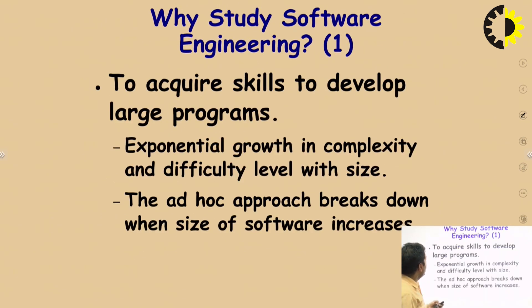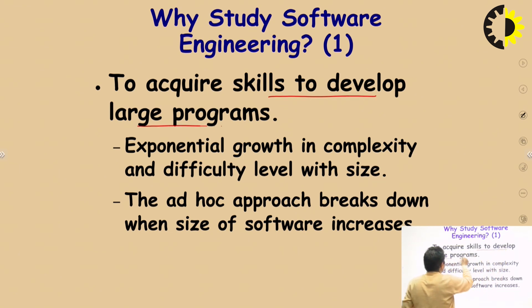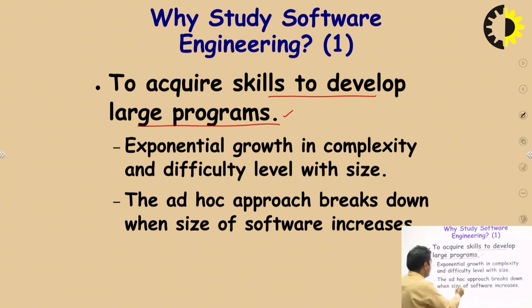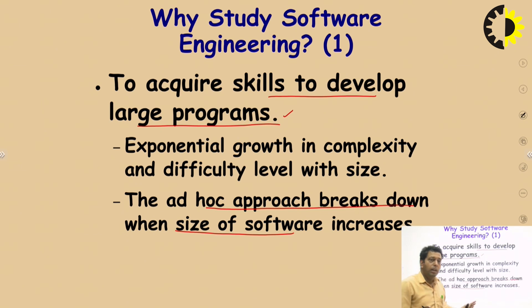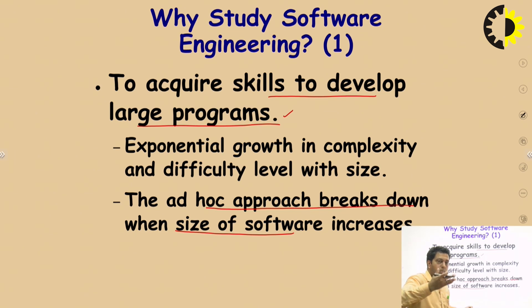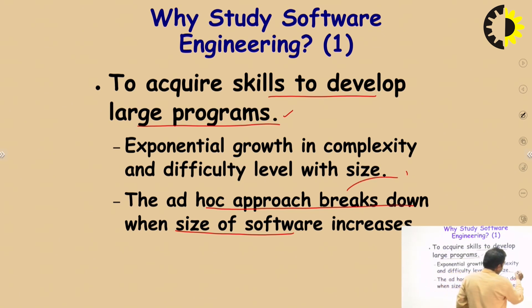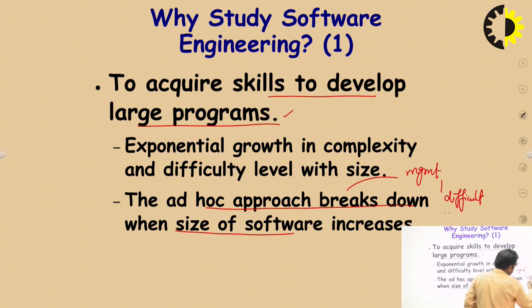Why study software engineering? First, to acquire skills to develop large programs. An ad hoc approach — a random approach — breaks down. It is not suitable for software development when you have to manage maintenance. Management becomes difficult, and that is the main reason why this random approach breaks down.